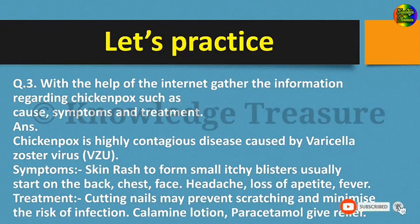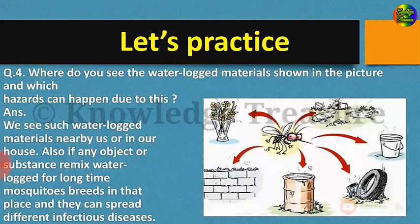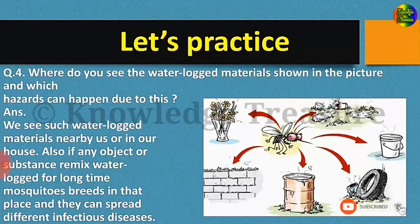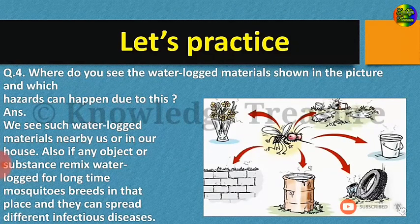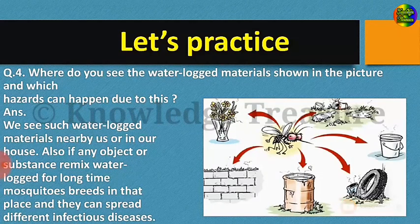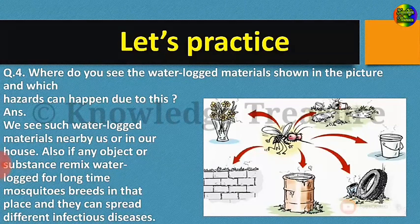Now let us see the next question, Question No. 4: Where do you see the waterlogged materials shown in the picture, and which hazards can happen due to this? The answer is: we see such waterlogged materials nearby us or in our house. If any object or substance remains waterlogged for a long time, mosquitoes breed in that place and they can spread different infectious diseases. Examples of waterlogged materials include a tire, coconut outer cover, pot, and cooler.